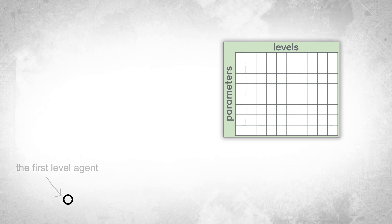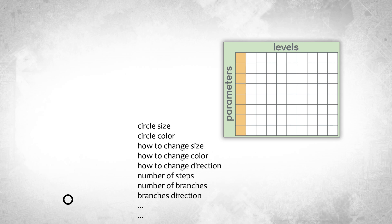Genes are represented as a table, which in turn determines a tree's appearance. Rows in the table represent parameters, while columns represent levels. The drawing process is executed by agents, each tasked with drawing circles. These are known as first-level agents. From the first column of the gene table, agents retrieve information about circle size, color, whether attributes should change at each step, step count, offspring count, and directions.